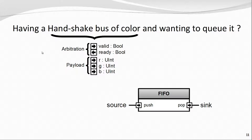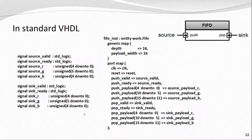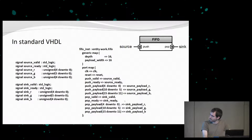Let's imagine you have a handshake bus — a very simple bus with a valid signal from master, a ready signal from slave to say stop or go, and a payload. Imagine you have two instances: source and sink, and you want to insert a queue between those buses. If you want to do that in VHDL, you have to write all this boring stuff: redefining all signals of your handshake bus one by one, twice, then instantiating the FIFO and mapping signals one by one into a single vector. In a company I worked at, we had on average 20 signals each time to map into those data structures — it's not very great.